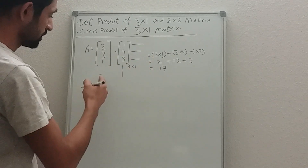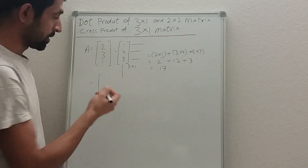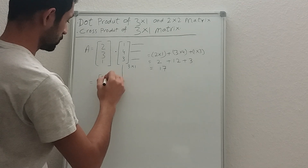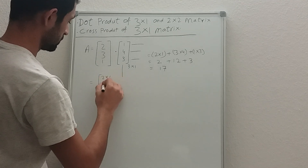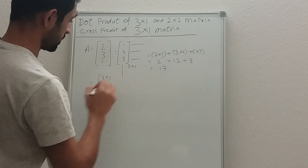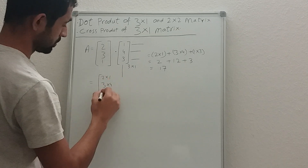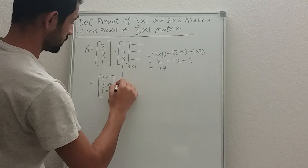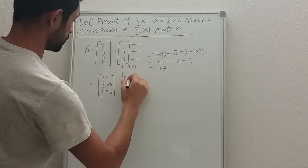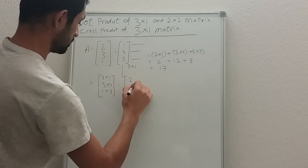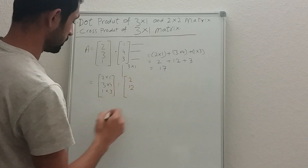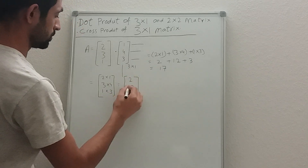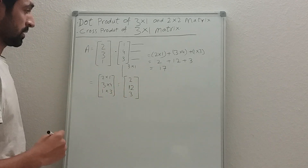The second method is you put it in matrix form: two times one, three times four, one times three — giving you two, twelve, and three. This is the dot product of the three-cross-one matrix.